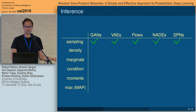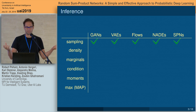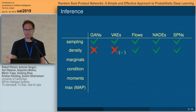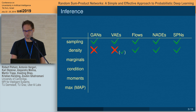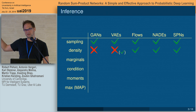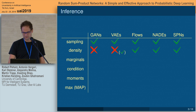But how about density evaluation? Say you want to compare two samples and ask which one is more likely. GANs typically don't have a density. VAEs do have a density, but it's hard to compute. Flows, NAITs, and SPNs can, by construction, efficiently evaluate the density of a sample.